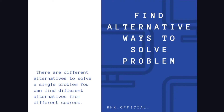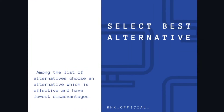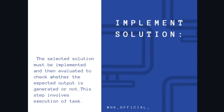Then find alternative ways to solve the problem. There are different alternatives to solve a single problem, and you can find different alternatives from different sources. Select the best alternative — among the list of alternatives, choose an alternative which is effective and has the fewest disadvantages. Then implement the solution. The selected solution must be implemented and then evaluated to check whether the expected output is generated or not. This step involves execution of the task.